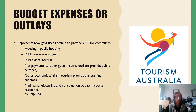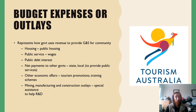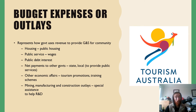Government outlays also cover housing — public housing provided for low-income individuals in various suburbs. There are public service wages for anyone working directly for the government, such as council workers or library staff. There's also public debt interest — paying interest on existing debt so we don't accumulate further debt because of it.